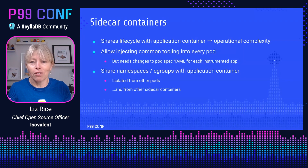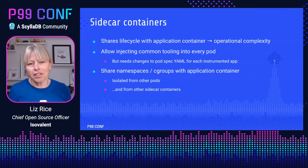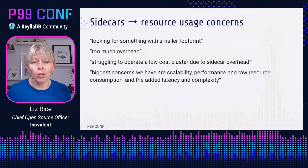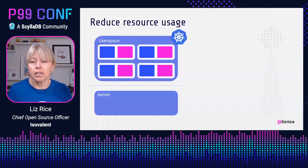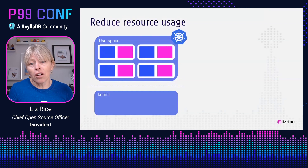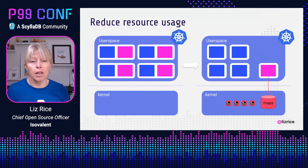For example, a network proxy sidecar shares the network namespace with the application so it can intercept every network packet. But we're using namespaces and cgroups to deliberately isolate pods from each other — that's the whole point of containerization. We're isolating our applications from each other and from the host, which means sidecar containers are also isolated from each other. This leads to another concern users told us about: the sidecar model can lead to a lot of duplicated resources, with significant overheads in memory, storage, and CPU usage.